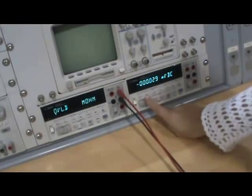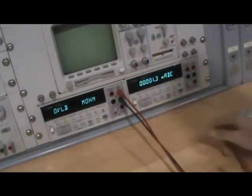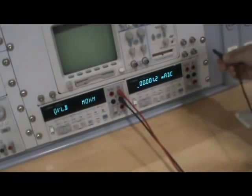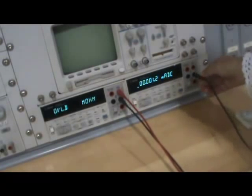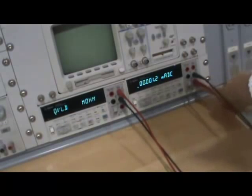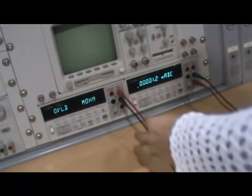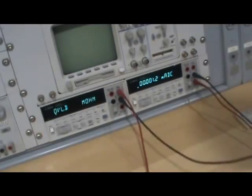Set the DMM on the left to measure resistance, and set the DMM on the right to measure current. Notice that you have to connect the red lead to the bottom terminal on the meter on the right to set it up in the ammeter mode. Now we connect the ohm meter to the ammeter in series. That is, we connect the red leads together and the black leads together.